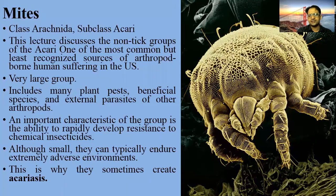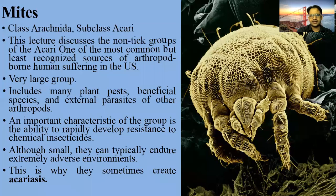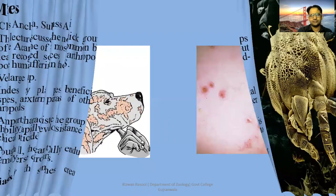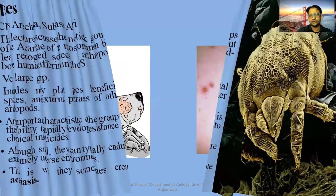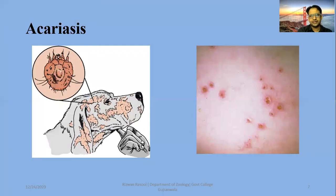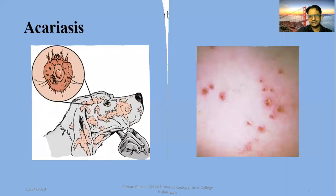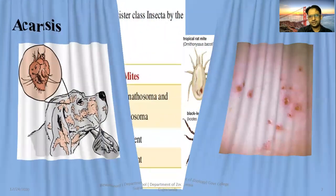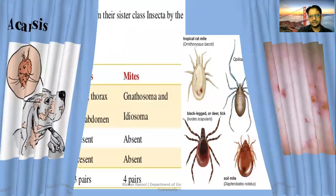This is why mites sometimes create a condition known as Acariasis, which can be seen in humans or other animals affecting their skin, causing rashes. Acariasis is a common disease and a common effect of mite infestation.